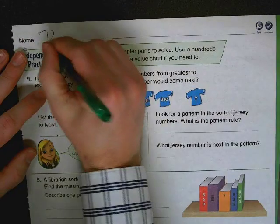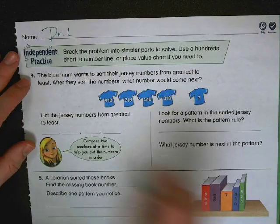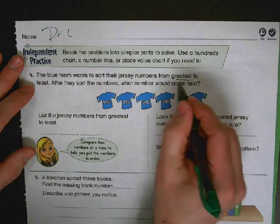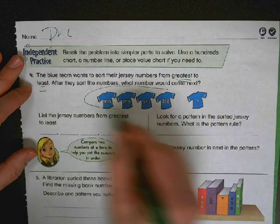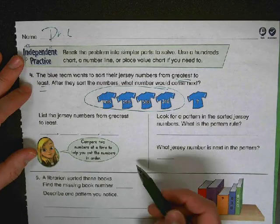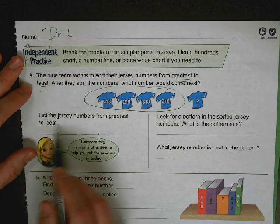Put your name on it. So the blue team wants to sort their jerseys from greatest to least. Put them in order here. So here are the four jerseys you have to sort. Put in order from biggest, greatest to least, biggest to smallest.